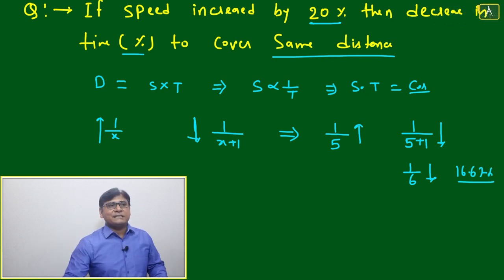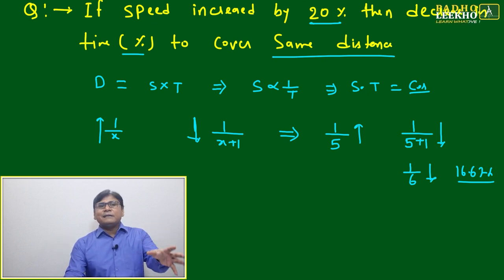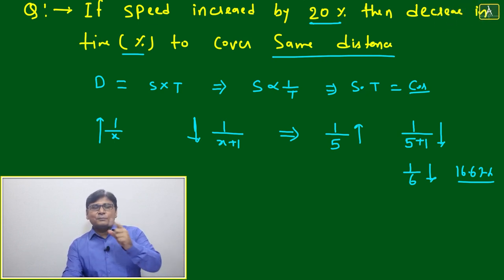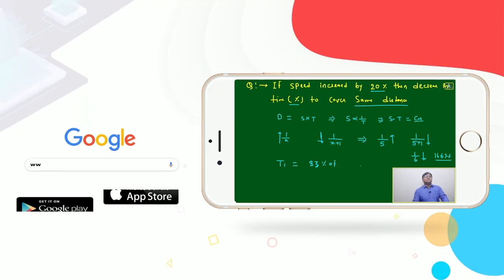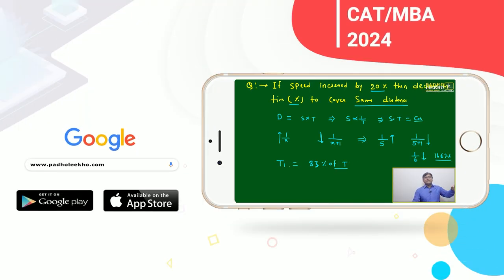The net time decrease is 16.67%. Don't say 16%. A 16.67% decrease means the new time will be 83% of the original. The new time taken by this motor vehicle or person will be 83% of T, whatever T was earlier.